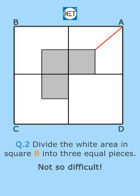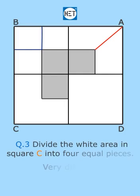Here is the answer. Question number three: divide the white area in square C into four equal pieces. Very difficult. Here is the answer.